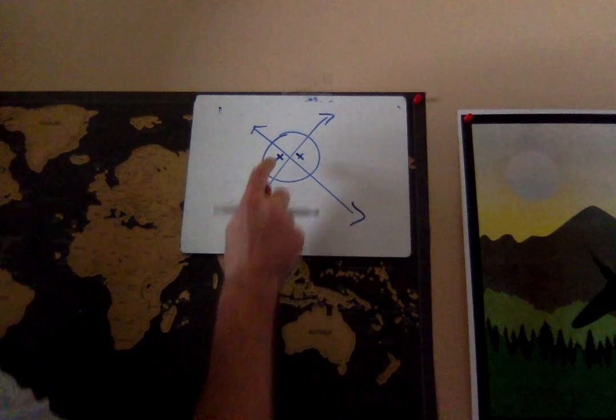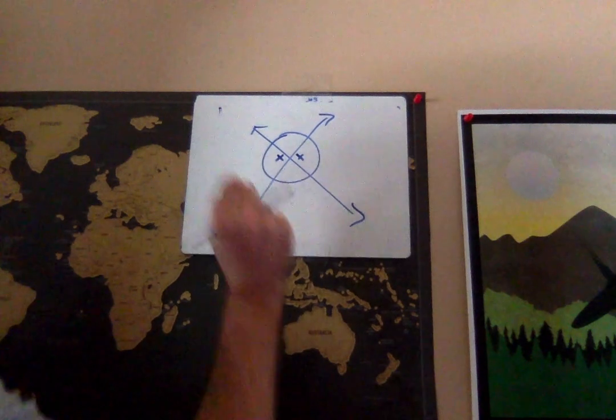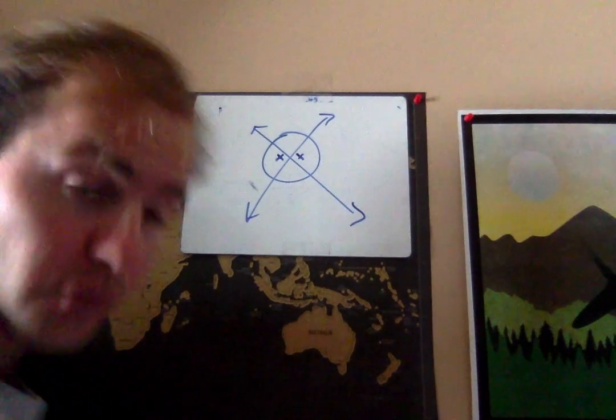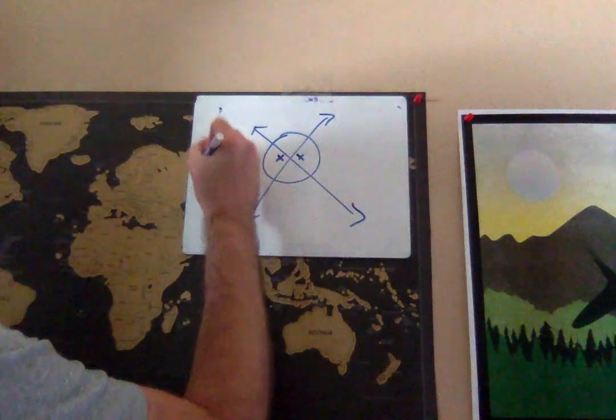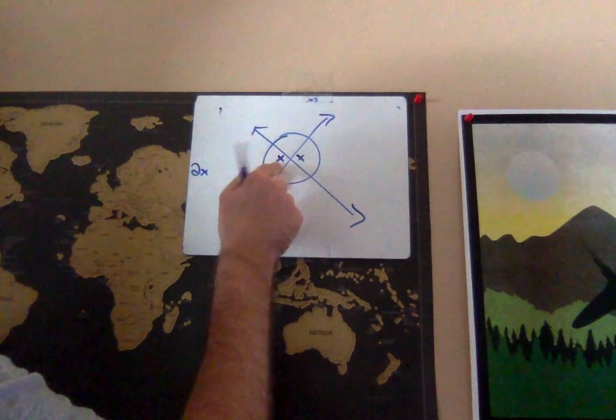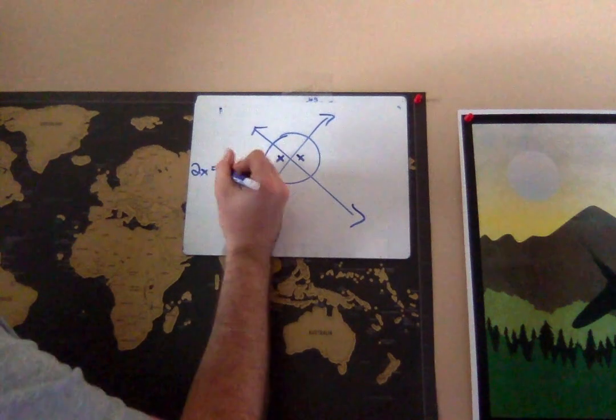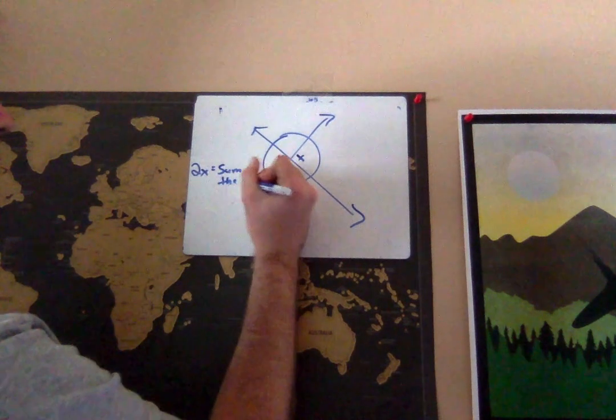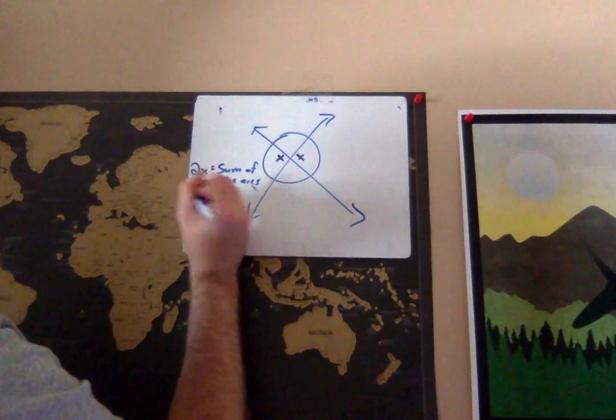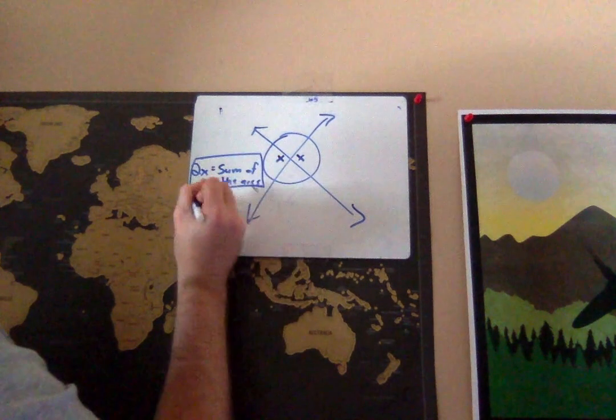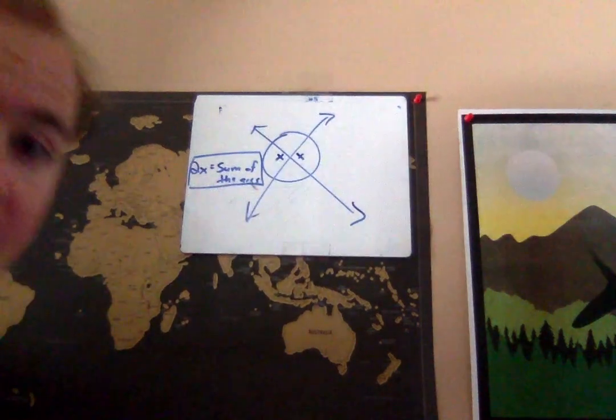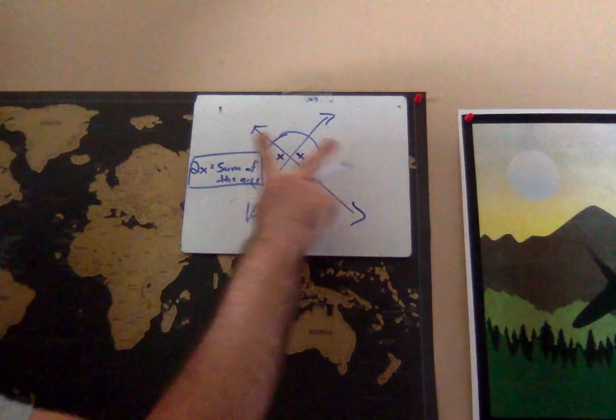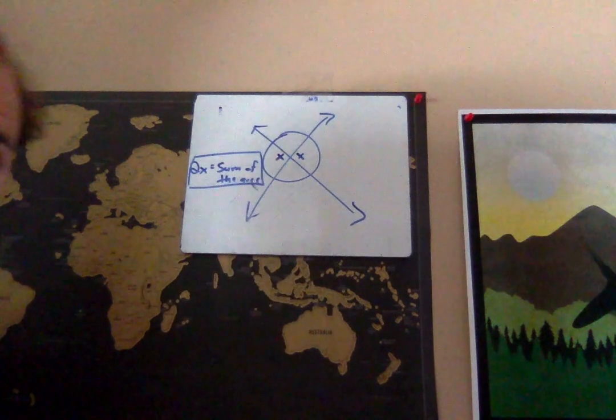One way of saying it is that this angle is half of the two arcs added up, or if you'd rather, it takes two of the angles in the middle to make the sum of the arcs. This right here is my preferred way to remember this.